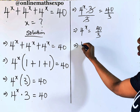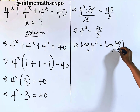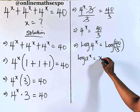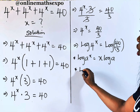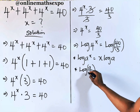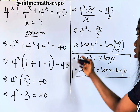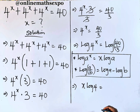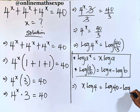Now at this point, just take the log of both sides. So we have log of 4 to the power of x is equal to log of 40 divided by 3. Remember, for every log of a to the power of x, it's always x log a — the power multiplies the log. Also, for every log of a divided by b, it's always log of a minus log of b — division turns to subtraction. So applying these rules, we have x log 4 is equal to log of 40 minus log of 3.